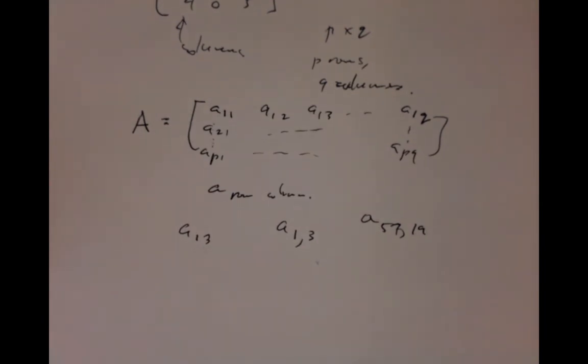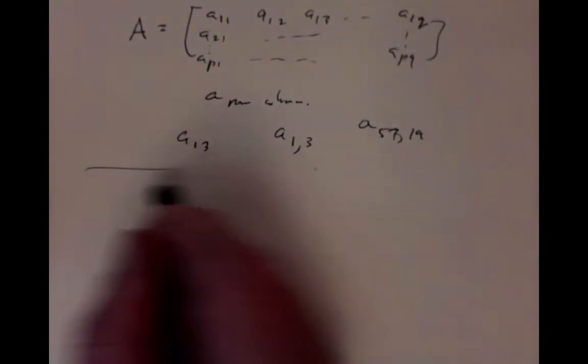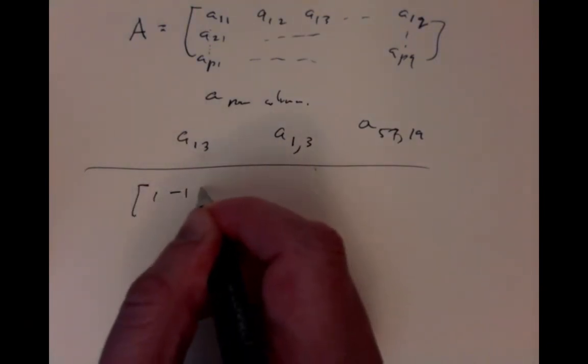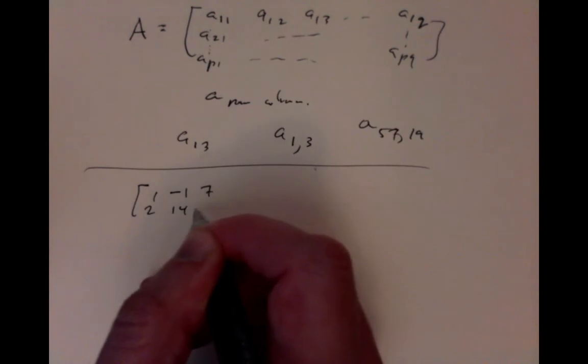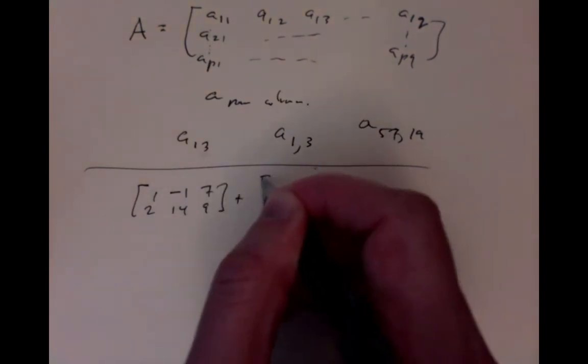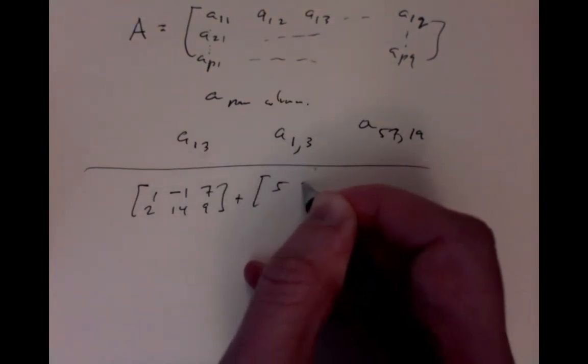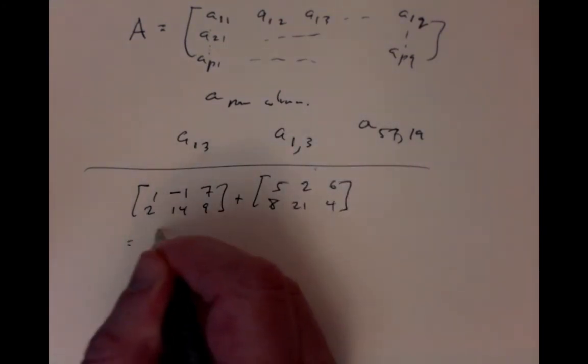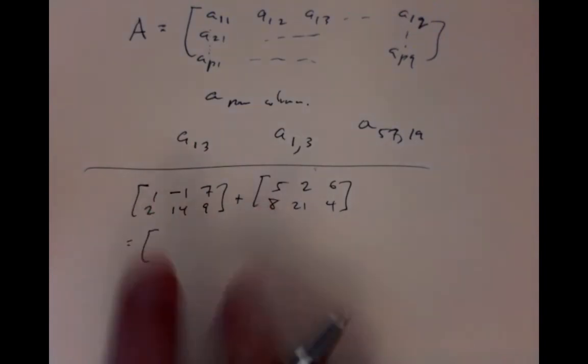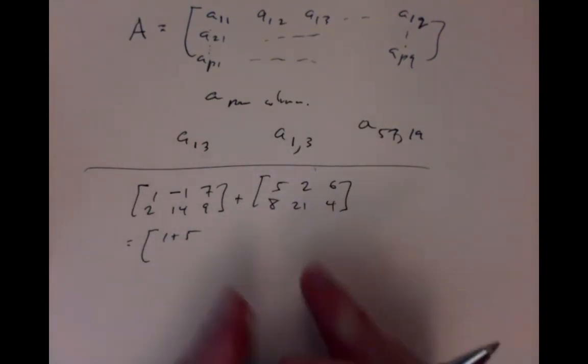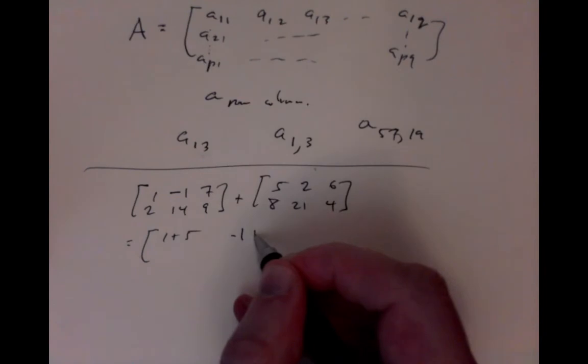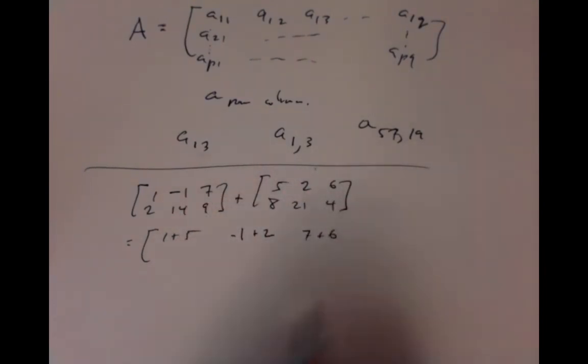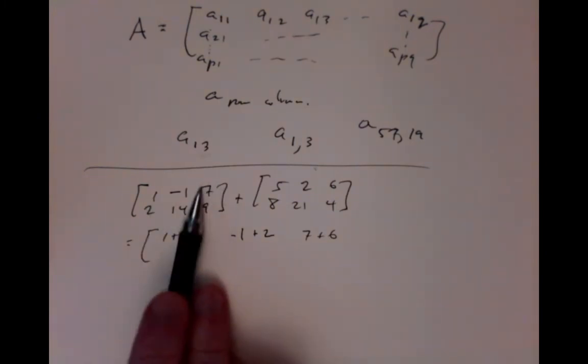Certain arithmetic operations of matrices are very elementary. If we want to add two matrices, we add them by adding their entries. [1, -1, 7; 2, 14, 9] plus [5, 2, 6; 8, 21, 4] is just add the entries: the 1 and the 5, the -1 and the 2, the 7 and the 6, because they sit in the same slot in the matrix.